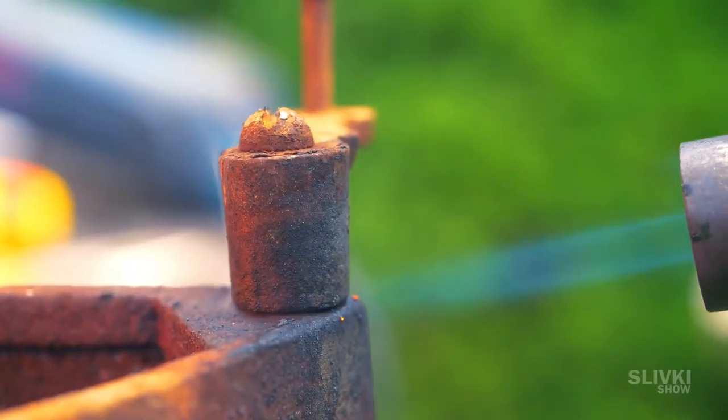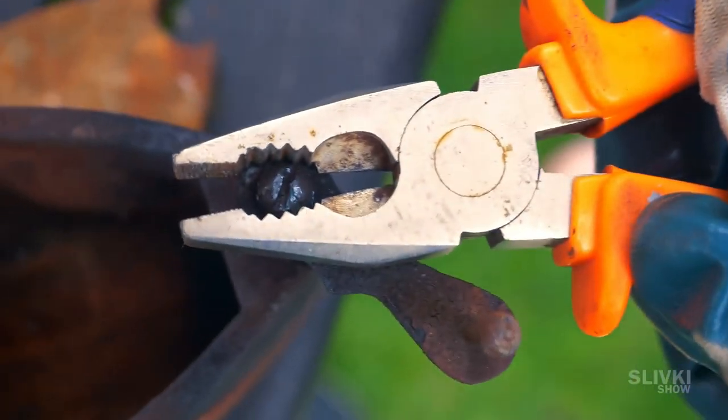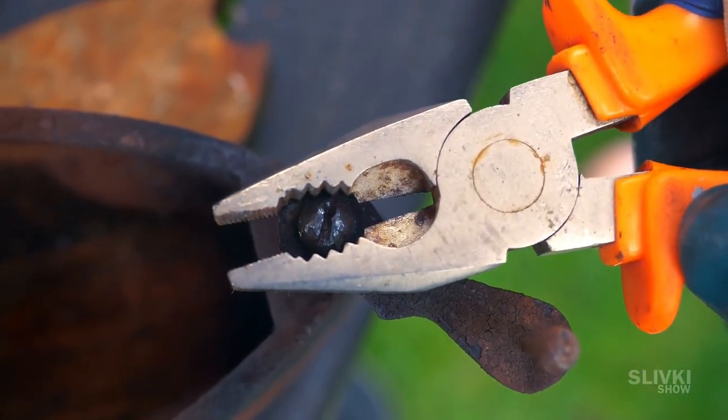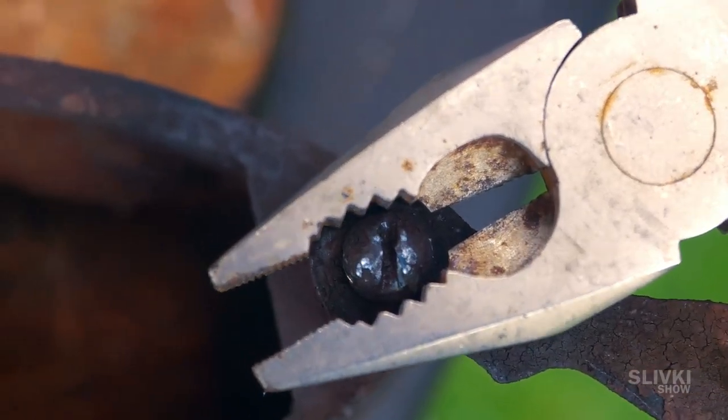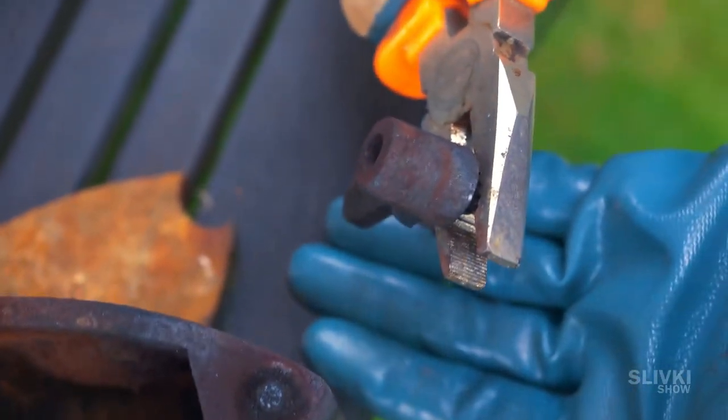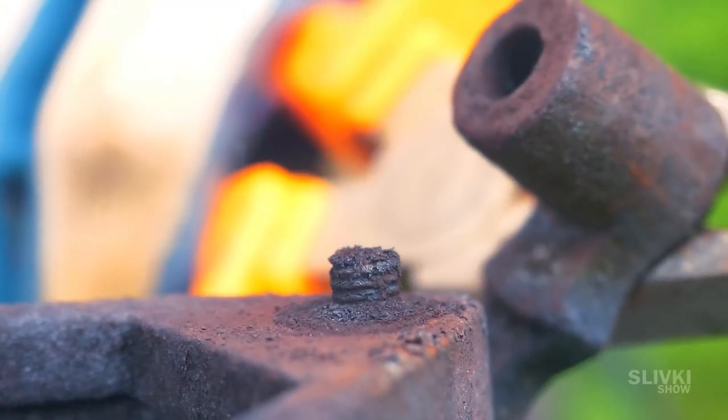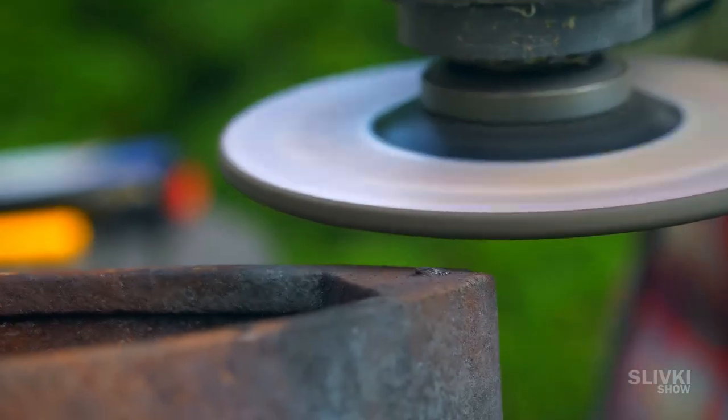Heating it up with a gas torch didn't help either. I thought I'd try it with pliers and it seemed to work at first, but it just made it worse. The bolt simply broke off. Well, what now? How do we unscrew the piece? We're just going to cut it off with bolt cutters and then we'll figure out what to do with it.